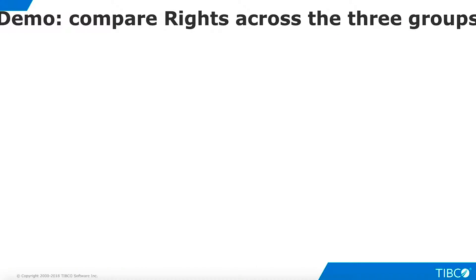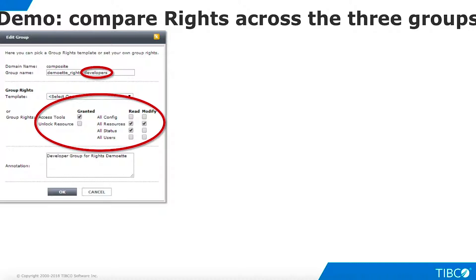We begin the demo by showing three groups with different sets of system-wide TDV rights. Open TDV Manager in a browser and navigate to the group management screen under the Users tab. Click on each group name to show its rights. The developers group may access TDV tools such as Studio and may read and modify all TDV resources. Members may also read TDV status information — seeing sessions, transactions, requests, caches, data sources, clusters, and so on — but cannot modify status information, meaning they cannot clear query plans and caches, terminate sessions, stop or restart the server. Developers may not unlock resources and have no access to TDV configuration or user information.